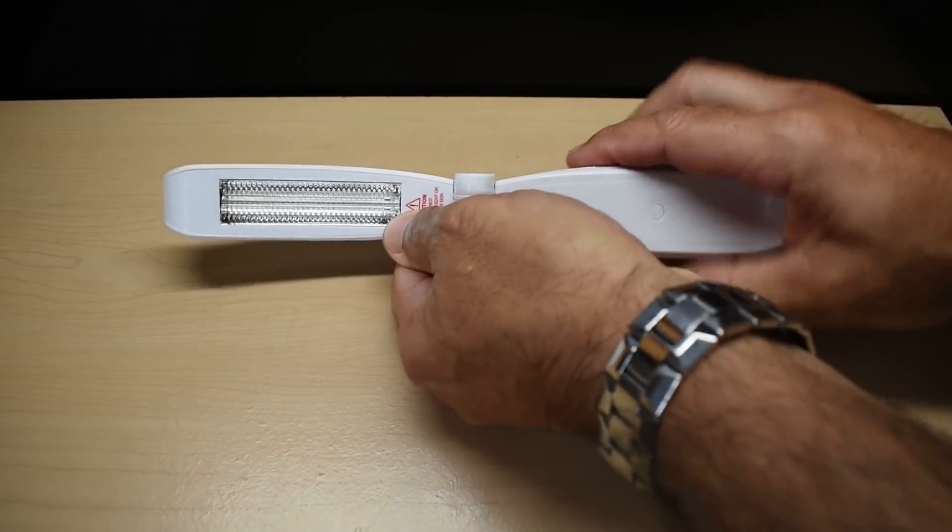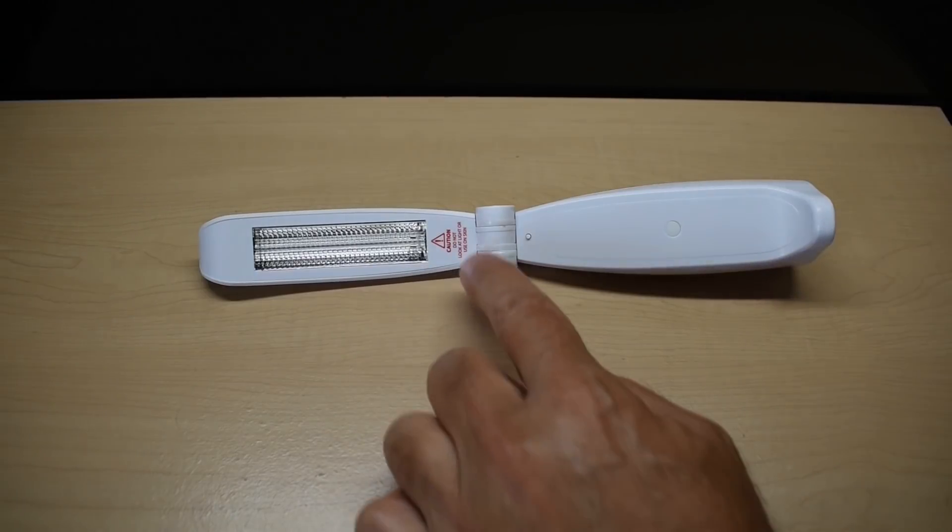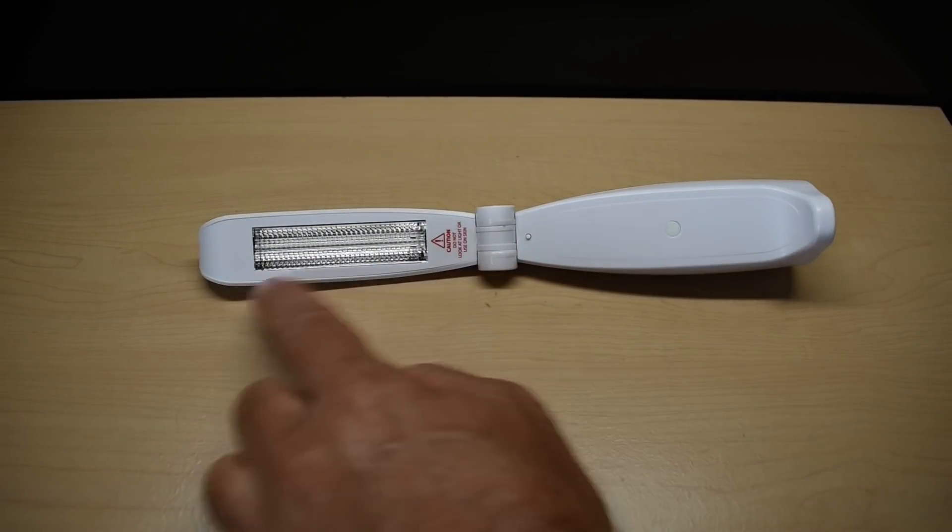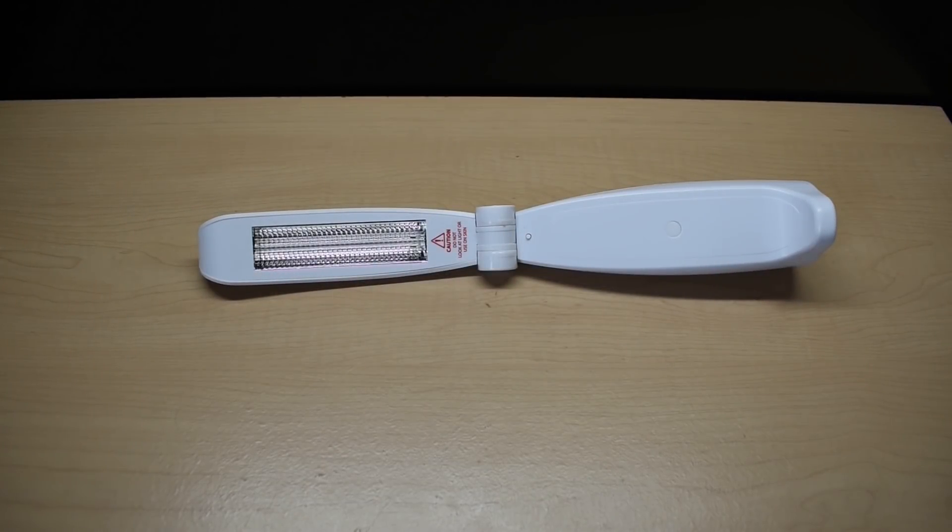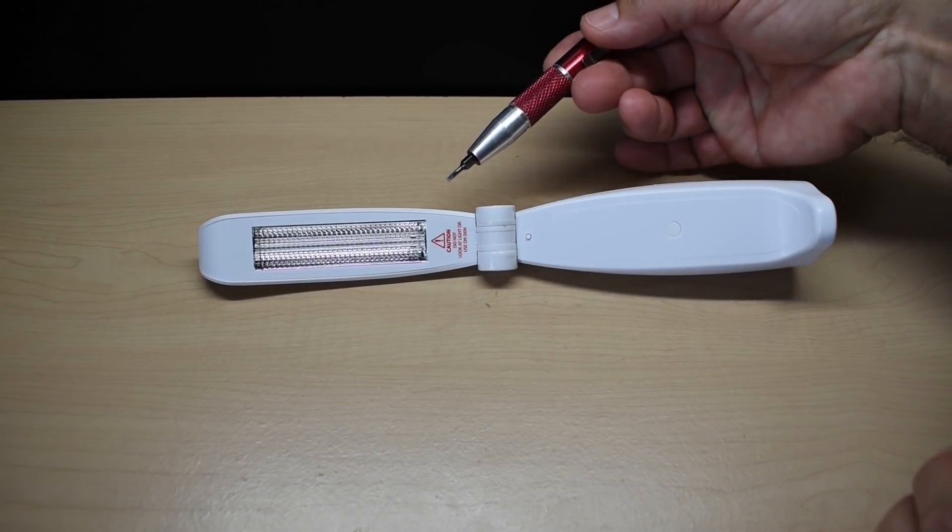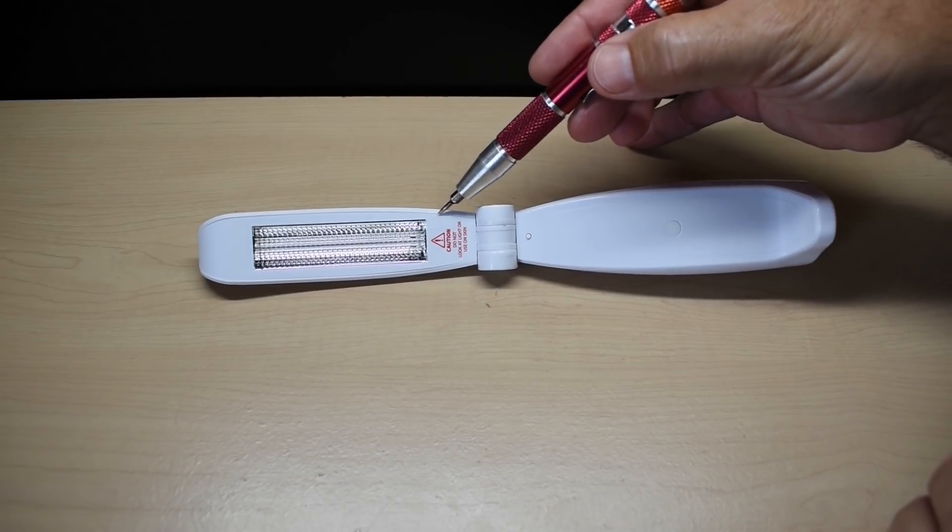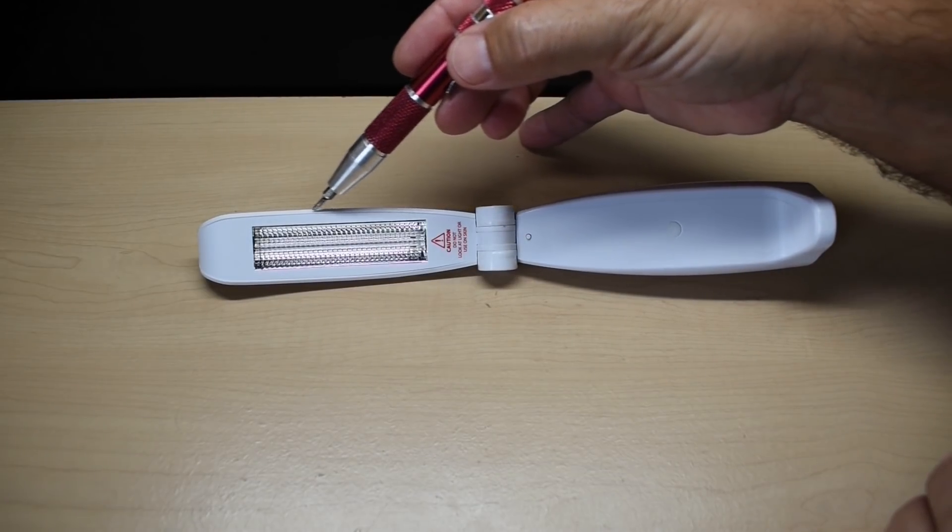Now the first thing I want to do is pop this whole cover off, because in order to do the modification, this entire piece of plastic needs to be removed. The way to do that is very simple. Take a very tiny slot screwdriver, a jeweler screwdriver, and you're going to reach between the outside edge, and the space all along here.